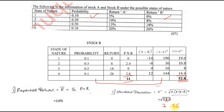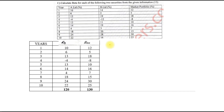The second question was based on covariance and beta. Let us see how to solve that second sum. The next question given was: calculate beta for each of the two securities from the given information. There is A Limited, B Limited, and Market. Always remember, beta is compared between the security and the market. First we will take A Limited along with the market return.